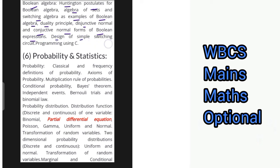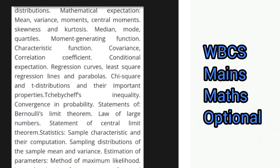The next section deals with Probability and Statistics. Under Probability you have classical and frequency definitions of probability, axioms of probability, multiplication rule of probabilities, conditional probability, Bayes' theorem, independent events, Bernoulli trials and binomial law. The next portion covers probability distributions including distribution function of one variable, binomial, Poisson, gamma, uniform and normal distributions, transformation of random variables, two-dimensional probability distributions, and transformation of random variables.